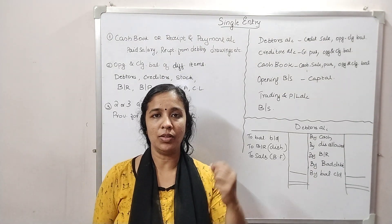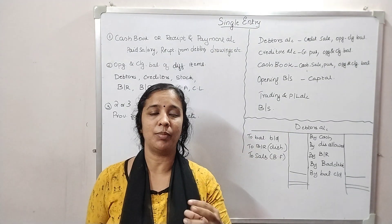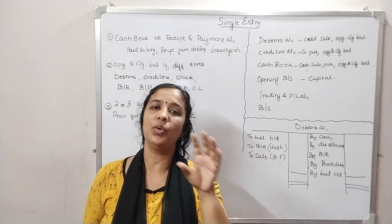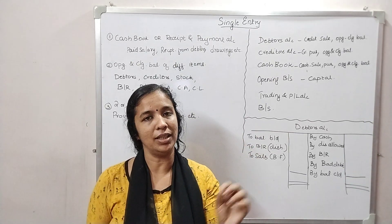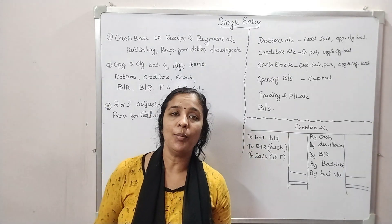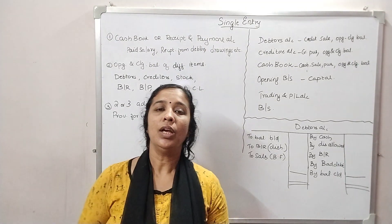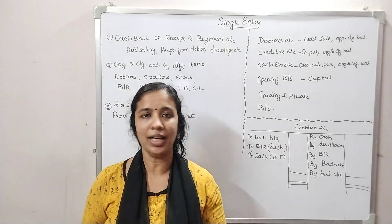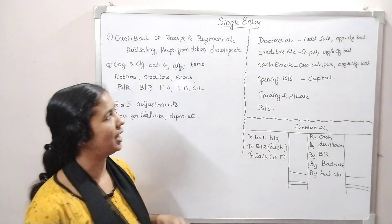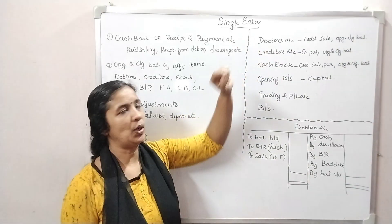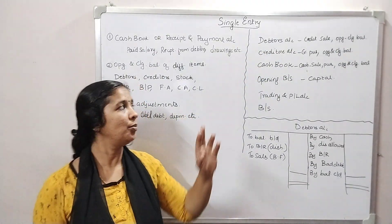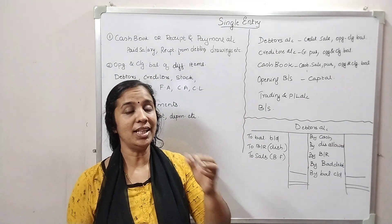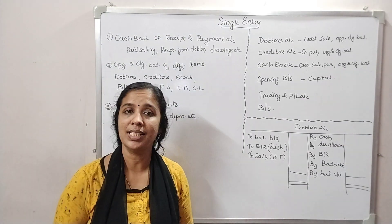We are preparing a trial balance. We have all the balances for this day. We will collect some accounts. The main thing we are preparing is the debtors account, and we are preparing for credit sales.